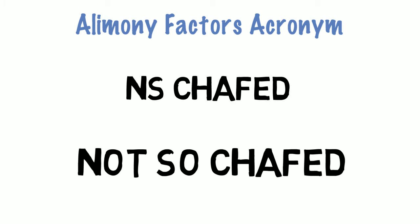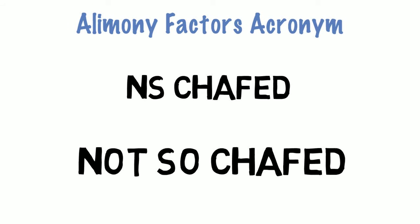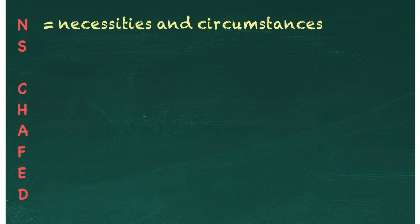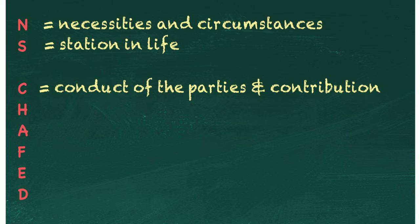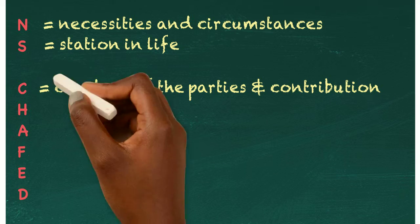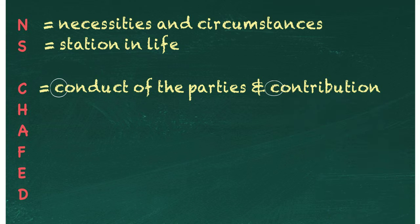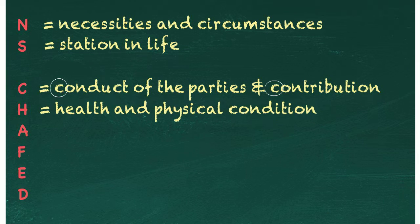N is for necessities and circumstances. S is for station in life. C is for conduct of the parties and their contribution. H is for health and physical condition. A is for age.